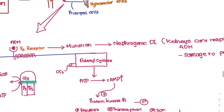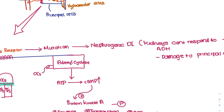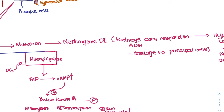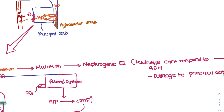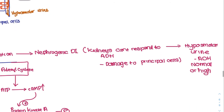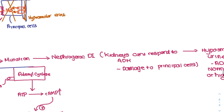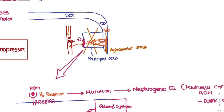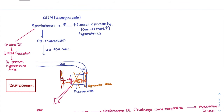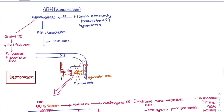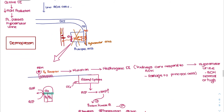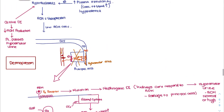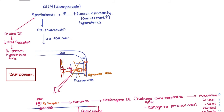In nephrogenic diabetes insipidus, a mutation in the V2 receptor means the kidneys cannot respond to ADH — it can also occur if these cells are destroyed. ADH can be normal or high, but there is no response. For central diabetes insipidus, the drug desmopressin — an ADH analogue — can be administered, but this cannot be used for nephrogenic diabetes insipidus. Desmopressin can also be used to treat nocturnal enuresis.